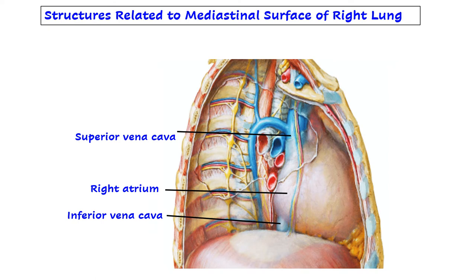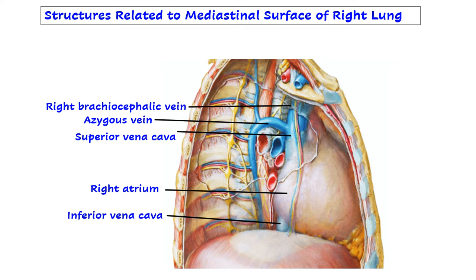Now let us see the tributaries of the superior vena cava which will also come in relation. You can see here: this is the arch of the azygous vein just above the root of the lung, and another vein is the right brachiocephalic vein, which joins the left brachiocephalic to form the superior vena cava. So the mediastinal surface of the right lung comes in relation to the right chambers of the heart and to the veins - mainly veins - that you should remember.